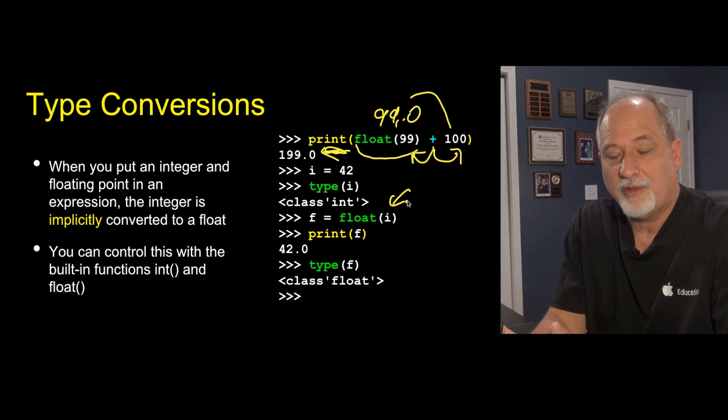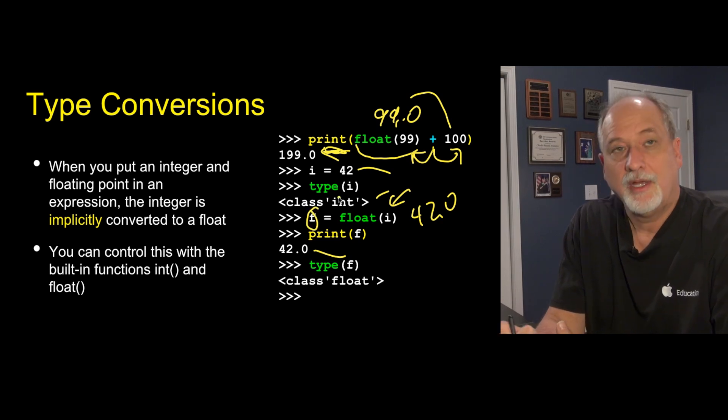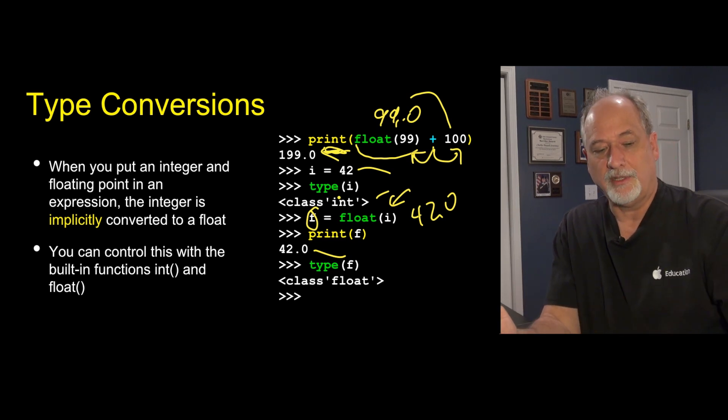I can also pass into the float function. I can say take this variable i, which has a 42, also an integer, and give me back a floating point. So that'll be 42.0. Pass that into f. We print it out, and it is indeed 42.0. And it's a float. So it knows the type and value in any variable. This is an integer of value 42. This is a float of value 42.0.